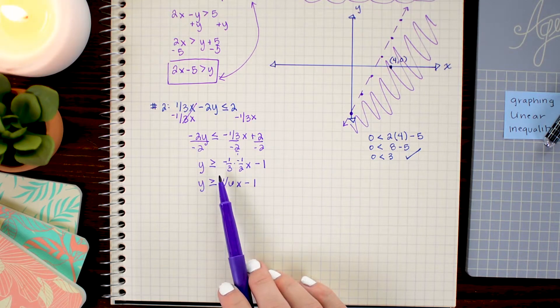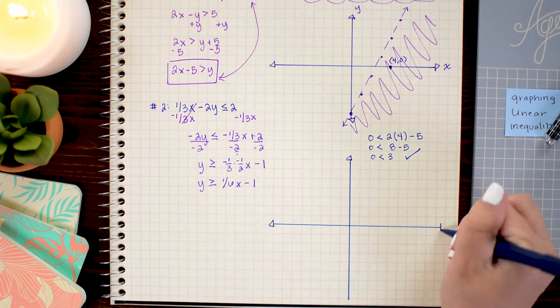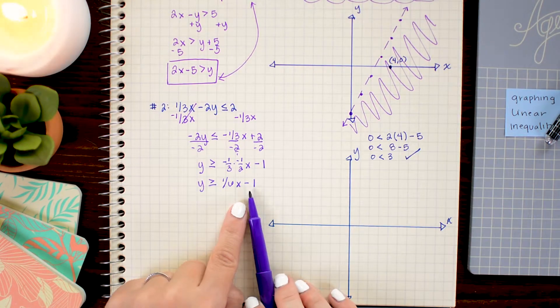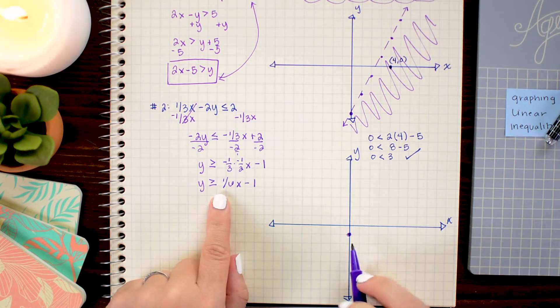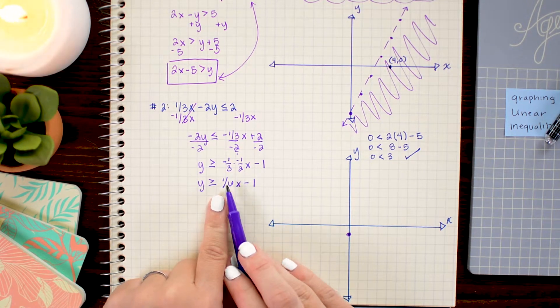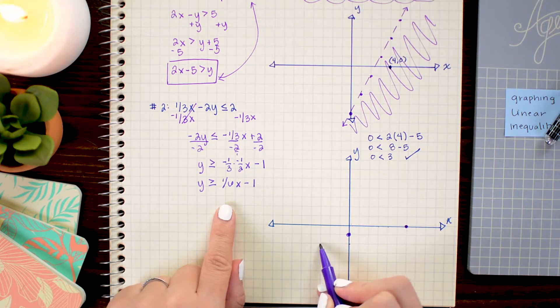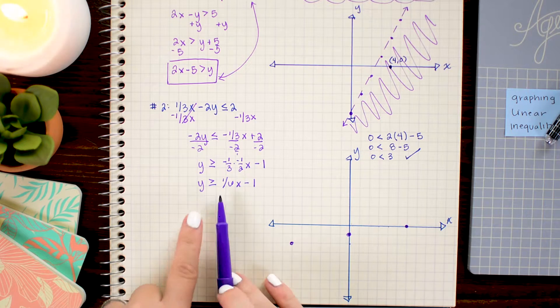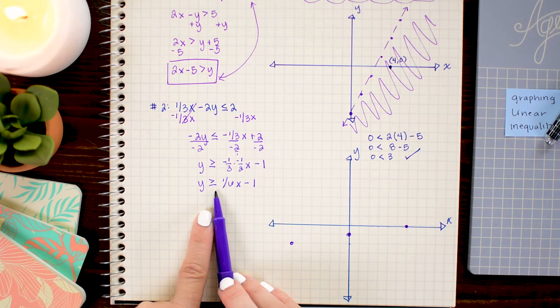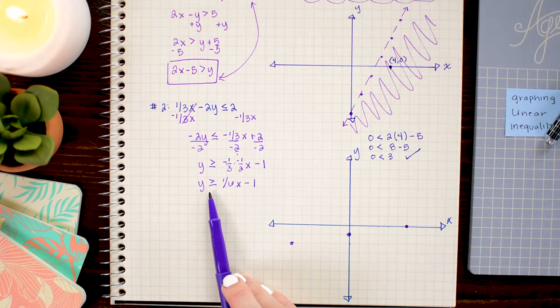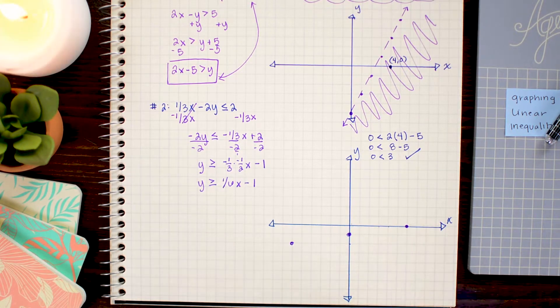I want to mark the y-axis at negative 1. And then apply a slope of 1/6. So up 1 and over 6. Now, because this time I do have the greater than or equal to symbol, that means that I want to include the points on the line. So I can go ahead and draw a solid line through this.